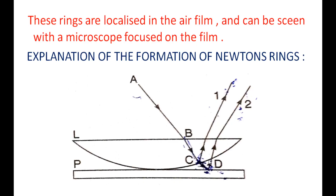Here, phase change occurs only for ray 2 because it is reflected from a rarer medium to a denser medium. These two reflected rays are in a position to produce interference fringes, and they are derived from the same ray AB. Hence the condition for interference is satisfied, and Newton's rings — circular rings — are formed.